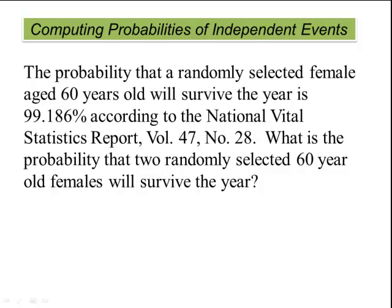The probability that a randomly selected female aged 60 years old will survive the year is 99.186% according to the National Vital Statistics report. What is the probability that two randomly selected 40-year-old females will survive the year? As we talked about before, these two events are independent.